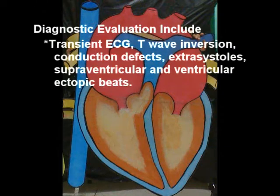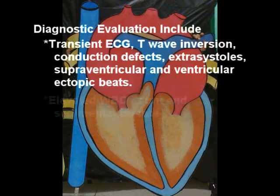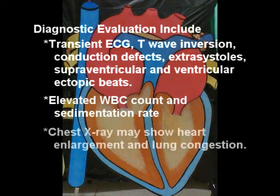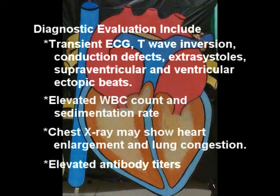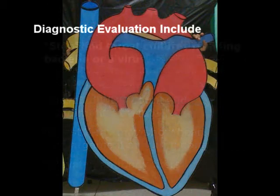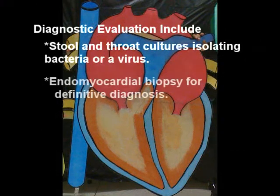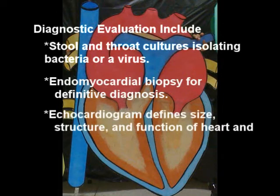Diagnostic evaluation includes transient ECG changes, T-wave inversion, conduction defects, and supraventricular and ventricular ectopic beats. Also evaluated are elevated WBC count and sedimentation rate. Chest X-ray may show heart enlargement and lung congestion, elevated antibody titers, and stool and throat cultures isolating bacteria or a virus. Endomyocardial biopsy provides the definitive diagnosis.